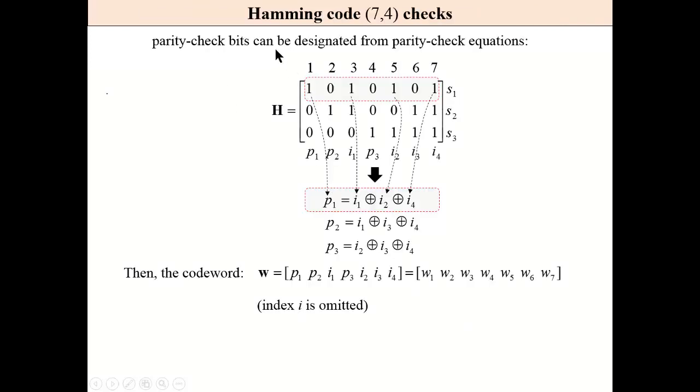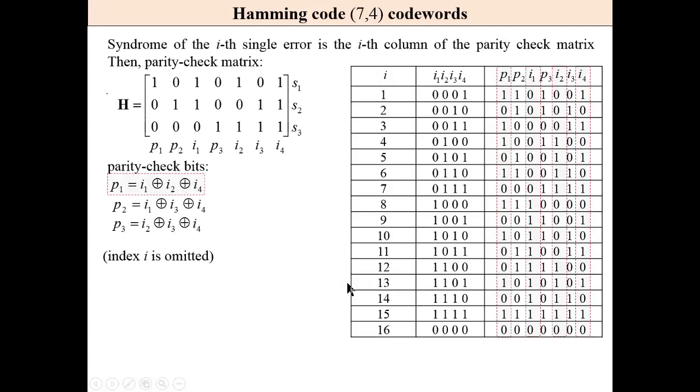Parity check bits are designated from parity check equations. Information bits designate parity check bits. For example, P1 is designated by the third bit, which is I1, the fifth, which is I2, and the seventh, which is I4. And two other parity check bits. These are parity check equations. And then we obtain the codeword that contains information bits and parity check bits. This is, in this table, we have all codewords for all 16 messages, information words.